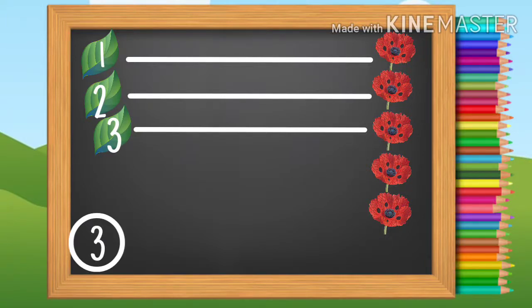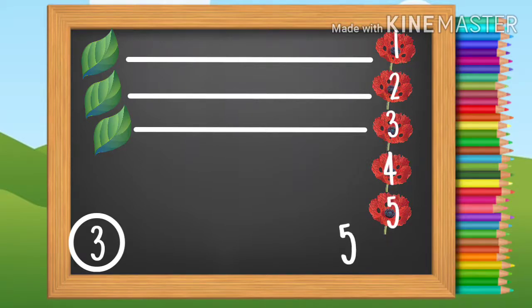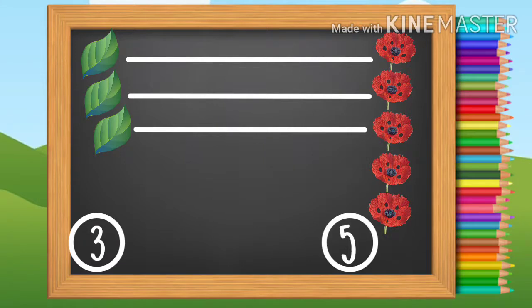Now, let's count the number of flowers. One, two, three, four, five. Five flowers. There are less leaves than there are flowers.